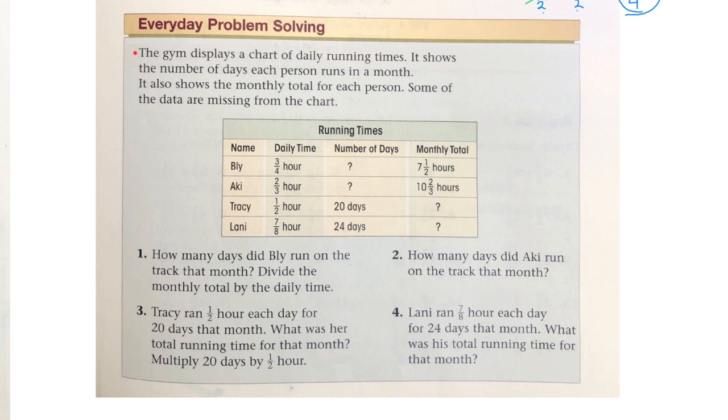Everyday problem solving. The gym displays a chart of daily running times. It shows the number of days each person runs in a month. It also shows the monthly total for each person. Some of the data are missing from the chart. Question 1: How many days did Bly run on the track that month? Divide the monthly total by the daily time. So here's Bly. So each day ran 3/4 of an hour. Total is 7 and 1/2 hours. So if we divide the total of the month by the daily time, you should get our answer.